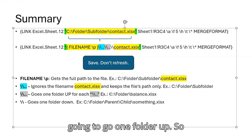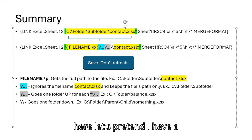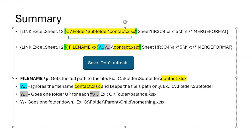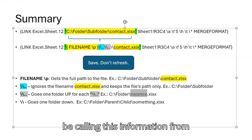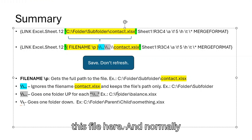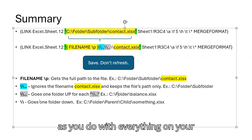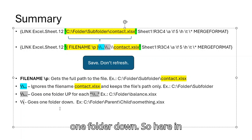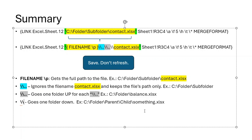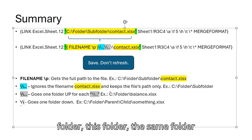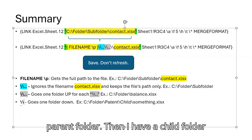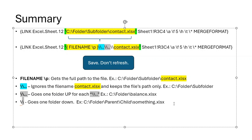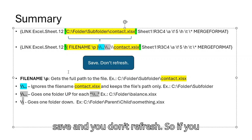For example, if I have a file called balance.xlsx one folder above, you would be calling information from that file. Normally, as you do with everything on your computer, you use a regular double backward slash every time you need to go one folder down. So in this example I have a parent folder, then a child folder, and something in that folder. Then you save and you don't refresh.